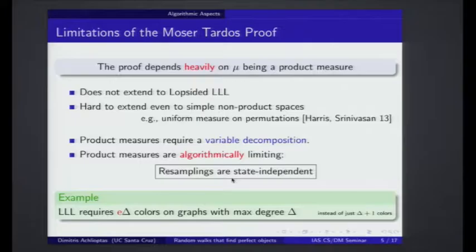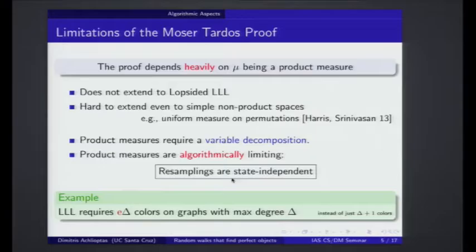To extend this to non-product spaces, what we propose to do is to completely get rid of the measure. We will actually start from scratch. We are not going to have a probability measure — we'll just have a set. Then we will cast everything in algorithmic terms, and we will see that somehow this is liberating and it allows you to do more things than you could do before.